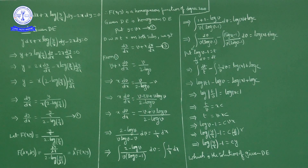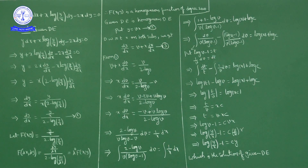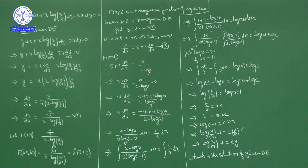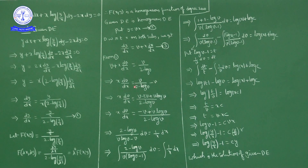In place of dy/dx we write v plus x dv/dx, and in place of y/x we write v. So v plus x dv/dx equals v upon (2 minus log v). Bringing v to the right side as minus v and taking LCM (2 minus log v), we get x dv/dx equals (v log v minus 2v) upon (2 minus log v), which simplifies to x dv/dx equals (minus v plus v log v) upon (2 minus log v).